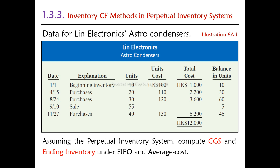This is an example using electronics as a beginning inventory. Here is the information that we have to prepare for the cost of goods sold and inventory by using FIFO and average costing in the perpetual inventory system.